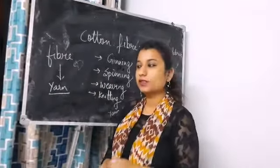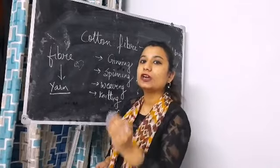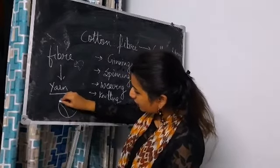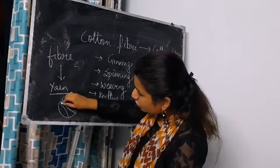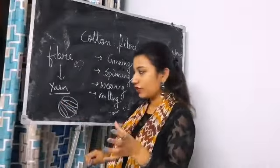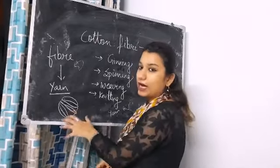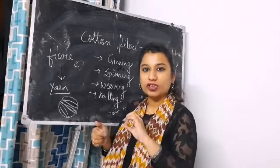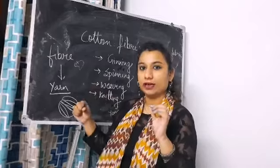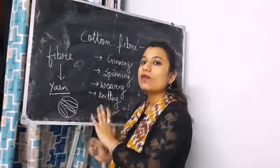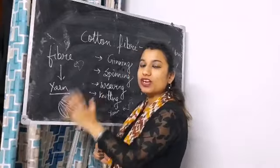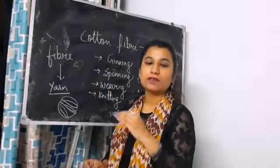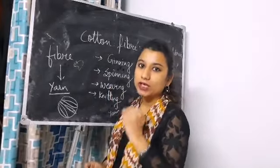Now let's talk about spinning. Spinning is the process of converting fiber into yarn. Yarn is the stretched and twisted form of fiber — you might have seen your mother knitting woolen clothes using a circular wool-like structure; that is yarn. We have to stretch and twist the fiber to make it into a single thread so that we can use it to convert into fabric. So spinning is the conversion of fiber into yarn.